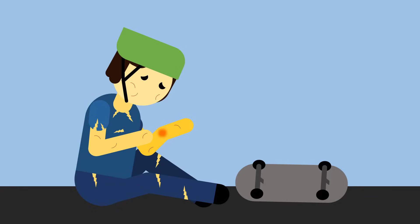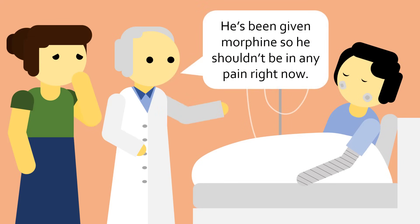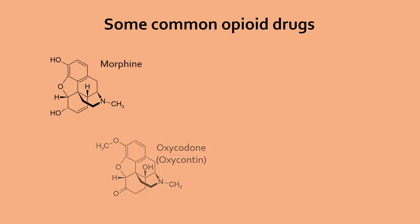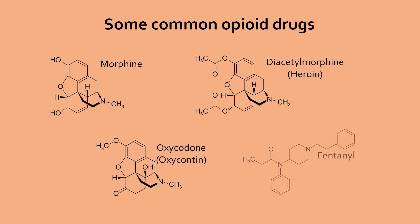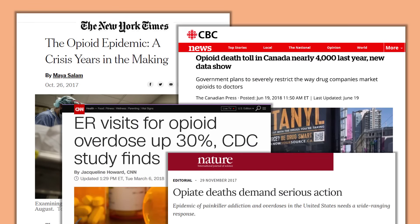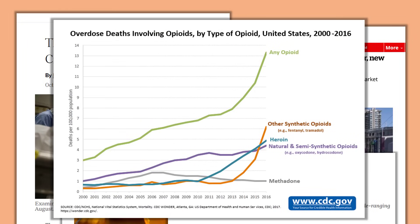Pain is one of the worst sensations a person can experience. Thankfully, we have access to one of the most powerful classes of painkillers: opioid drugs. Some examples you might know are morphine, oxycodone, heroin, and fentanyl. While these are excellent painkillers, opioid drugs are also one of the most widely abused and deadliest drugs, with North America currently experiencing an opioid epidemic where the number of overdoses are at an all-time high.